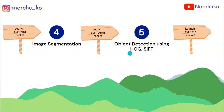Next is object detection using HOG and SIFT. HOG is a histogram of gradients. The SIFT method is a feature-based method. If we don't have a convolutional neural network, we will use these methods. They are manual feature extraction methods. For HOG, we represent the image as a gradient vector, then use a support vector machine for direct classification — for example, detecting whether there is a human or not.